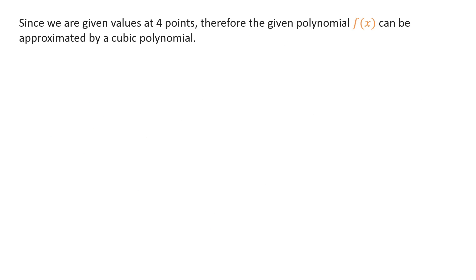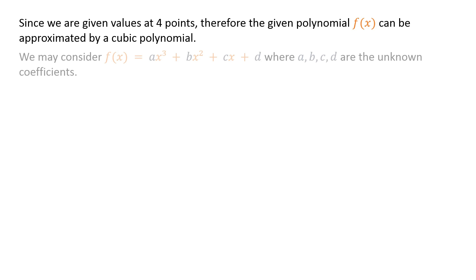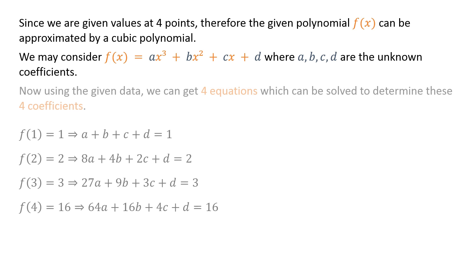Since we are given values at 4 points, the given polynomial f of x can be approximated by a cubic polynomial. We may consider f of x equals a times x cubed, plus b times x squared, plus c times x, plus d, where a, b, c, and d are the unknown coefficients. Using the given data, we can get 4 equations which can be solved to determine these 4 coefficients.